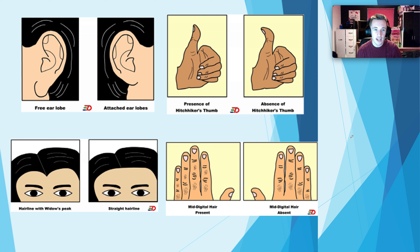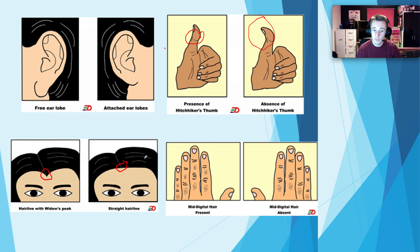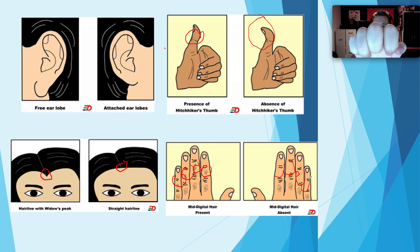Here are some more. This is the earlobe we were talking about. We've also got presence of what's called a hitchhiker's thumb — you can see that this one is sort of bent backwards and the other one is more straight upright. Hairline — widow's peak versus straight hairline — again, that's an inherited trait. And mid-digital hair presence: if you have hair on the mid part of your fingers, some people don't have that. It is something that's either inherited or not — I do have it, which means I've inherited that.